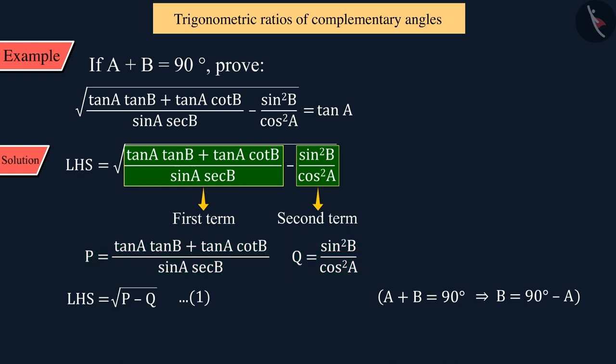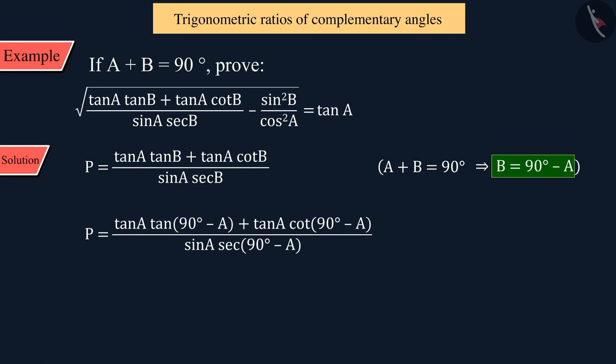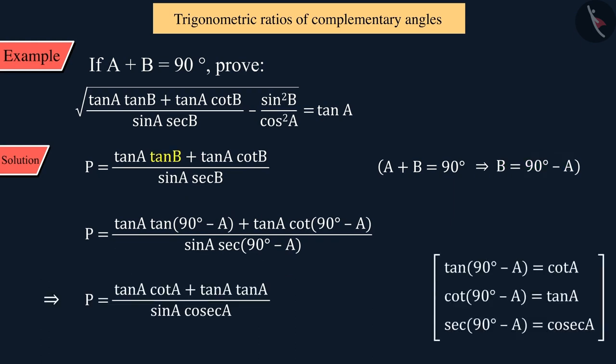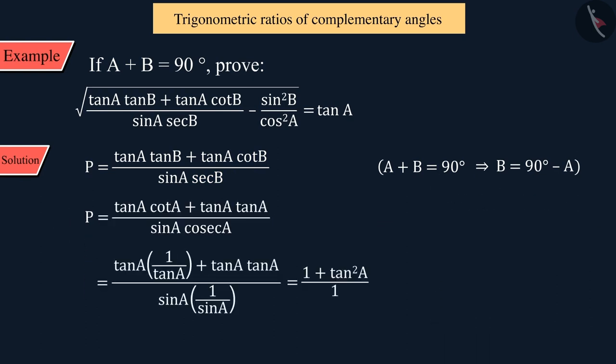Let us talk about the first term P. Here, we will substitute the angle B by 90 degrees minus A. This is how we convert tan B into cot A, cot B into tan A, and sec B into cosec A. Now, let us solve them so that we get the value of the first term as 1 plus tan square A. We will express this as equation 2.